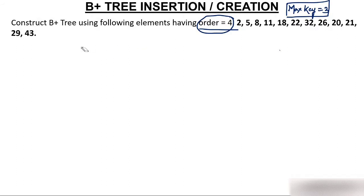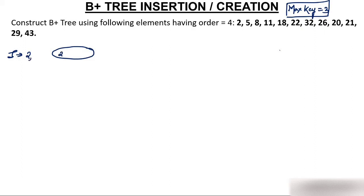Let's start building the B+ tree. First, insert 2 — I have created a node and inserted 2. Then insert 5 — 5 comes after 2. Then insert 8 — 8 is now inserted.